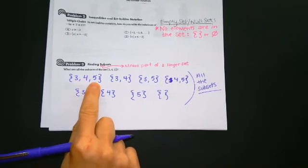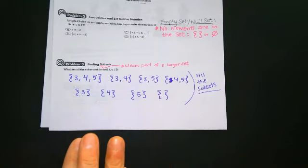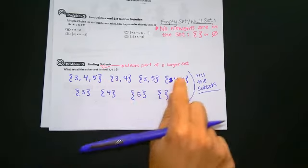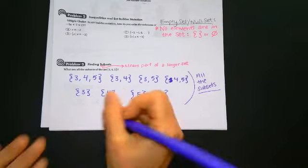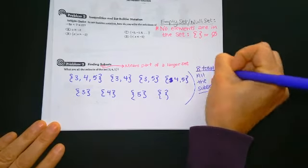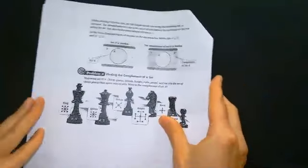So this counts as the 3, 4, 5. I'm not going to switch the 4 and the 3 here and count that as a different one. So there is 1, 2, 3, 4, 5, 6, 7, 8 subsets total. 8 total. And that's how you list the subsets. So let's do this some more. So flip your page here.